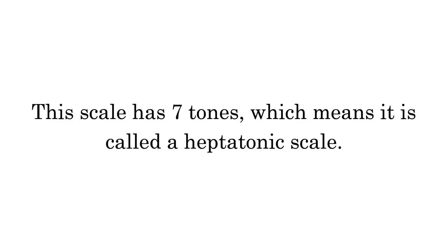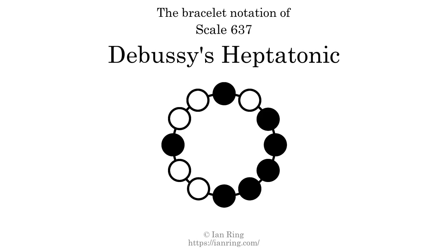This scale has 7 tones, which means it is called a heptatonic scale. This is a bracelet notation diagram of scale 637. The shaded circles represent tones that appear in the scale, and they are read clockwise, starting at the top.